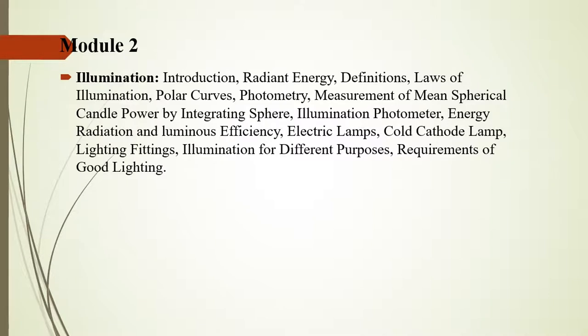Module 2 is illumination. Here you study radiant energy and terms used in illumination, laws of illumination, polar curves, photometry, and the measurement of mean spherical candle power by integrating sphere. Also illumination photometer, energy radiation, and luminous efficiency. Then the different types of electric lamps, including cold cathode lamps, different light fittings, and illumination for different purposes like factory lighting, flood lighting, and street lighting, along with the requirements of good lighting.